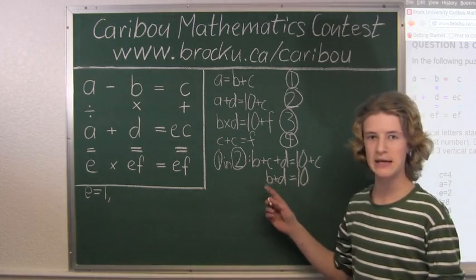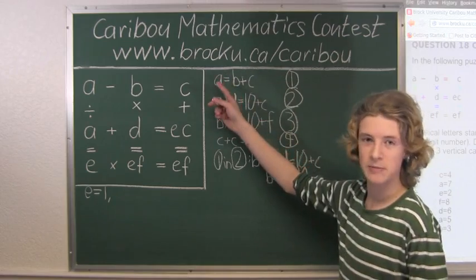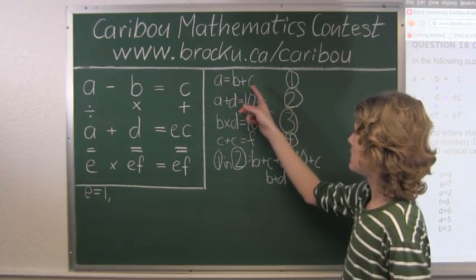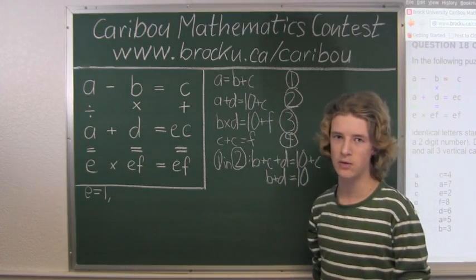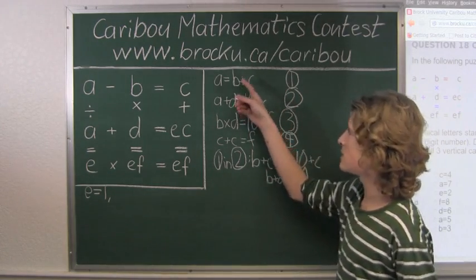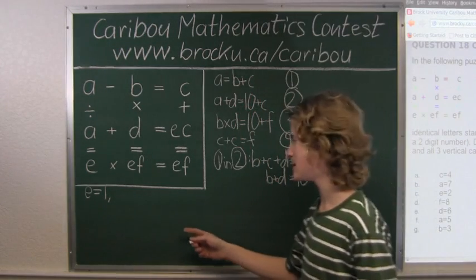So we know that if B is 8, then when we look up here, and we know A must be a one-digit number, then we know that C would have to equal 1, but we already know that E equals 1. So we know that B cannot equal 8, so we know B must equal 2, and D must equal 8.